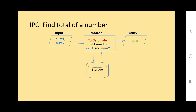For example: I want to find the total number of two numbers. Total of two numbers is the output. To find the total, we need number one and number two as input - you create the variable names yourself. The process is 'to calculate total based on number one and number two.' Writing 'to calculate output based on input' is wrong because it can answer any question. You must write specifically: to calculate total based on number one and number two.